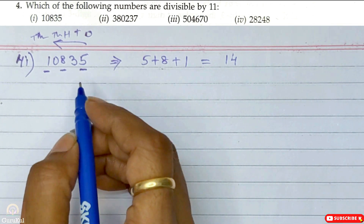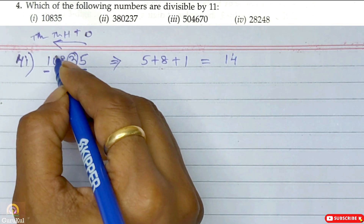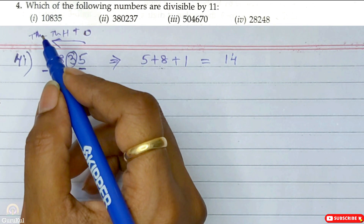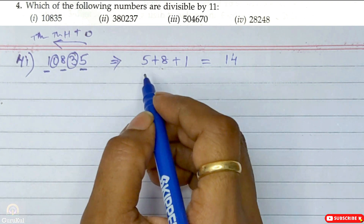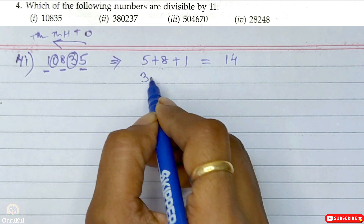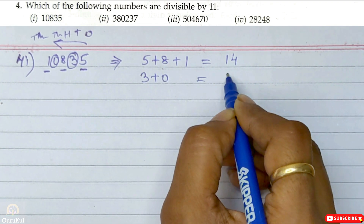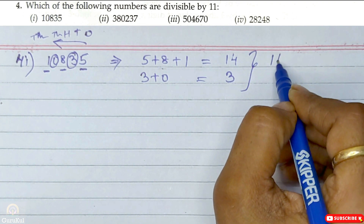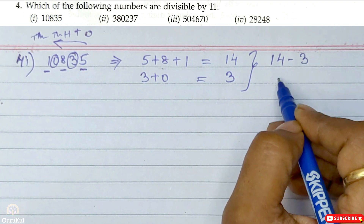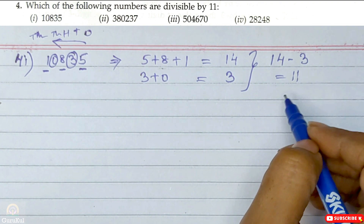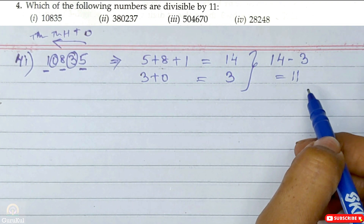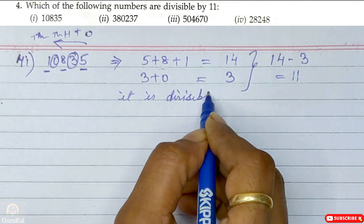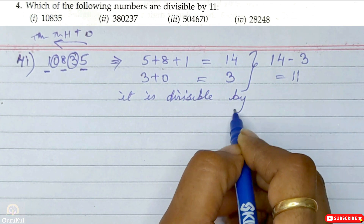Now we need to find the sum of the digits at even places, which starts from the 10th place, moving to the left. For 10835, the even-place digits are 3 and 0, so 3 plus 0 gives us 3. The difference is 14 minus 3, which gives us 11. Since the difference is 11, it is divisible by 11.